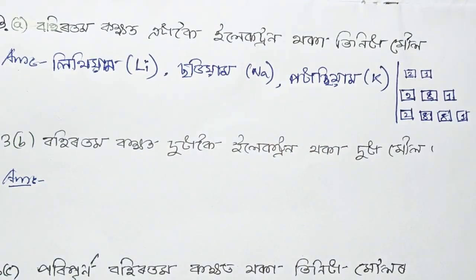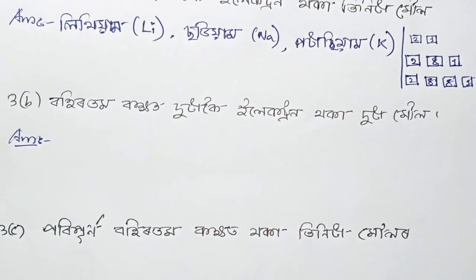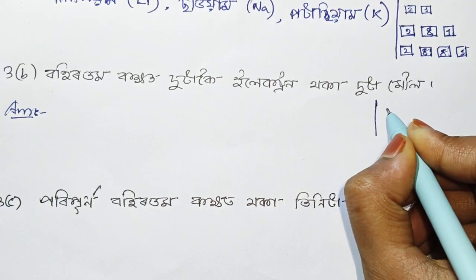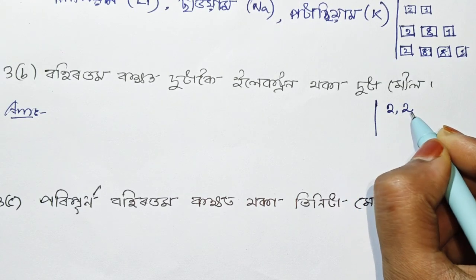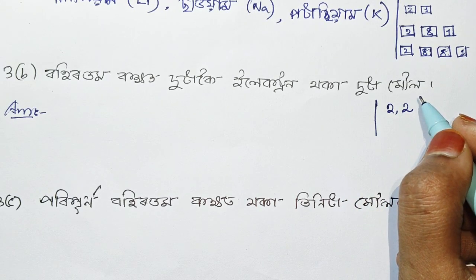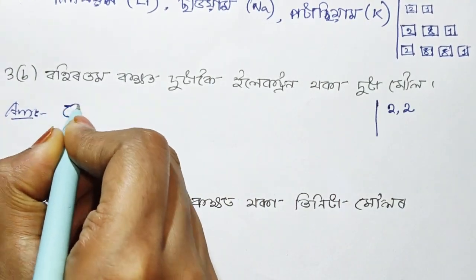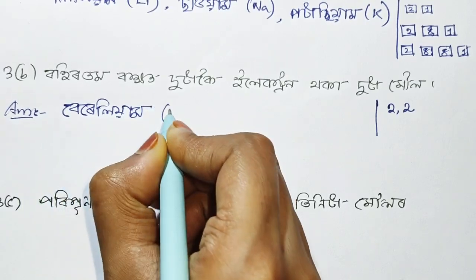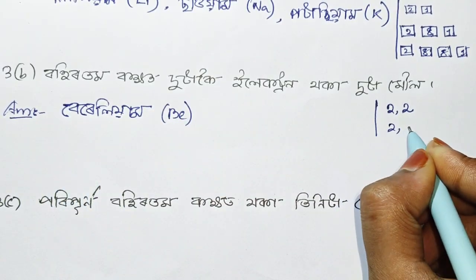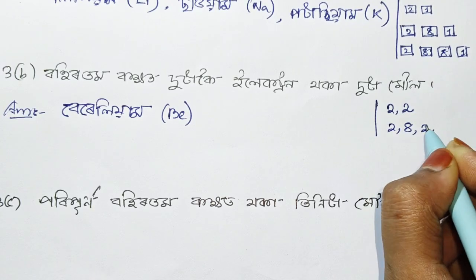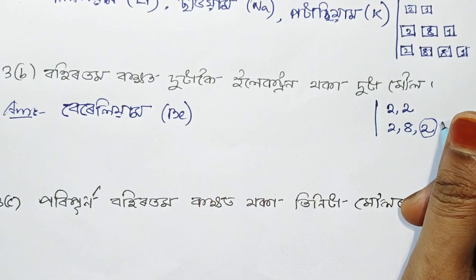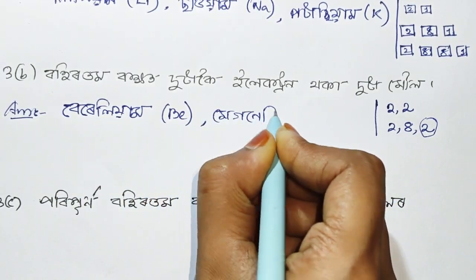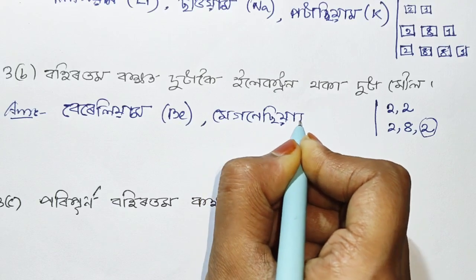Next we will see episode B, number 2. We will see the electrons: 2, 2 — that is 4. Hydrogen, helium, lithium, beryllium. Beryllium, Be, is 2, 2. We will see number 2. Magnesium, Mg.